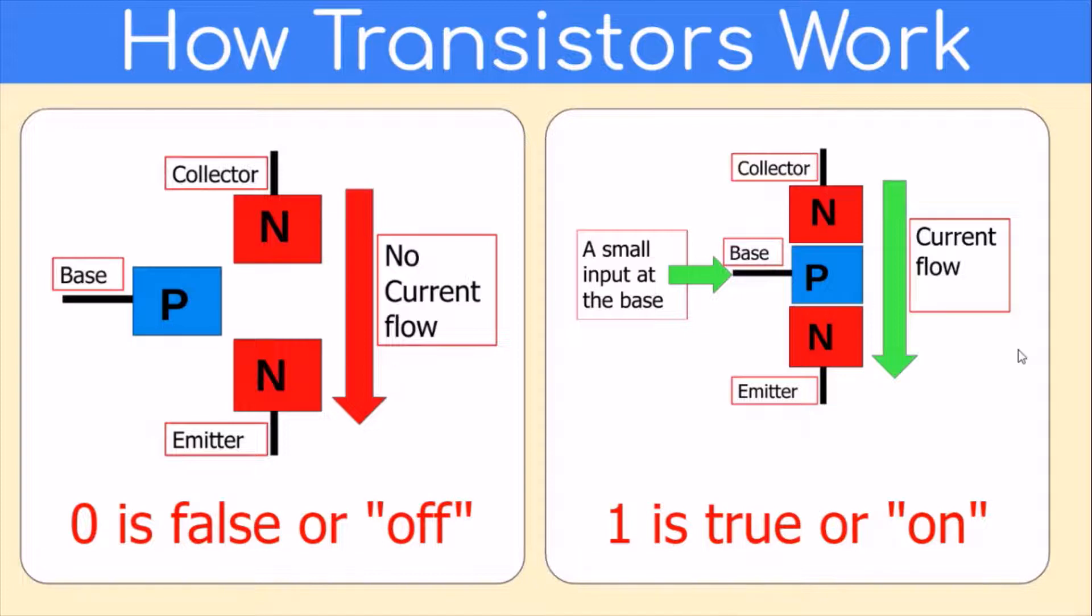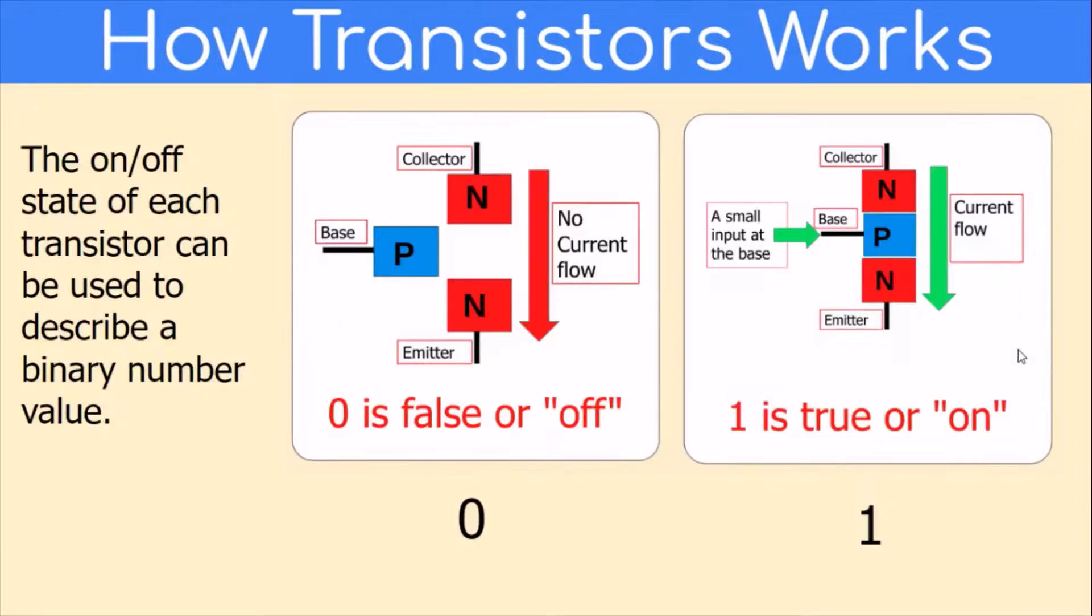We can have transistors in two states: the zero state or off, where there's no current flow, and the one state or on, where there is current flow. This on/off state of each transistor can be used to describe a binary number value.